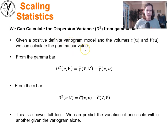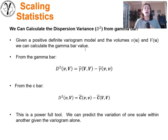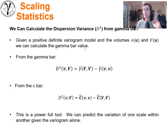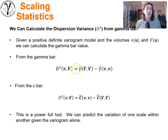Given a positive definite variogram model and volumes v and V, we can calculate the dispersion variance directly from gamma bar values. That is super cool, and that's the reason we introduced the concept of gamma bar. In the last lecture we talked about doing a volume-integrated calculation of gamma bar — basically integrating the tail and head of the lag vector over the two volumes, calculating the variogram that resulted as we integrated the positive definite variogram model over those two volumes. If we look at dispersion variance between v and V, we calculate it by taking gamma bar(V,V) and subtracting gamma bar(v,v).